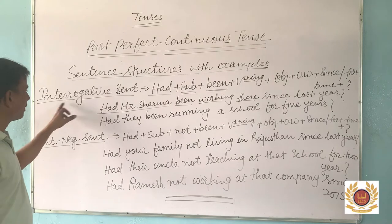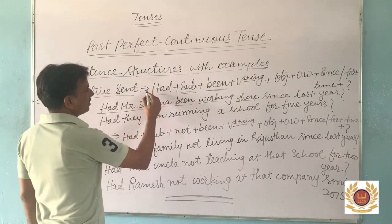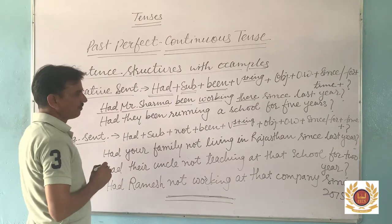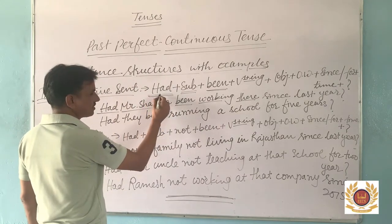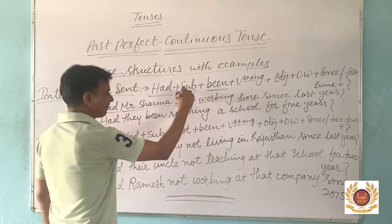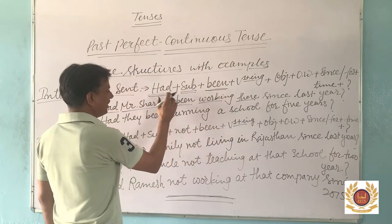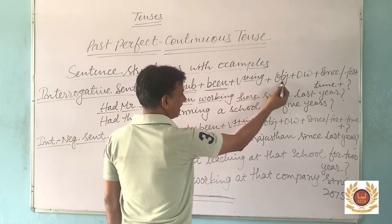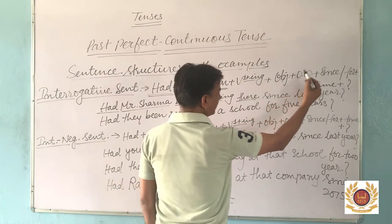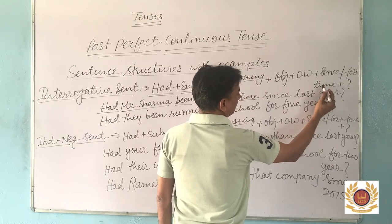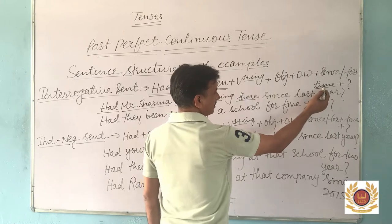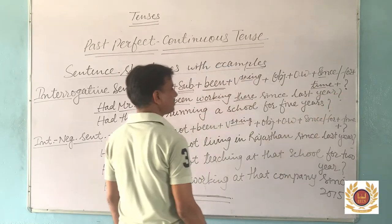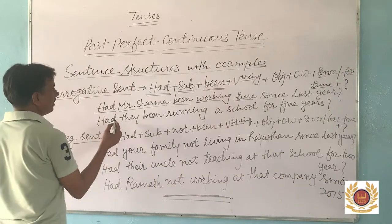Now, the interrogative sentence structure in Past Perfect Continuous Tense. In an interrogative sentence, we start with 'had' because 'had' is our helping verb. After 'had' we use the subject, and after the subject we use 'been'. So between 'had' and 'been' we set our subject. Then the first form of verb with '-ing', then the object, then other or complementary words if any, then 'since' or 'for' according to our time, and at last a question mark.